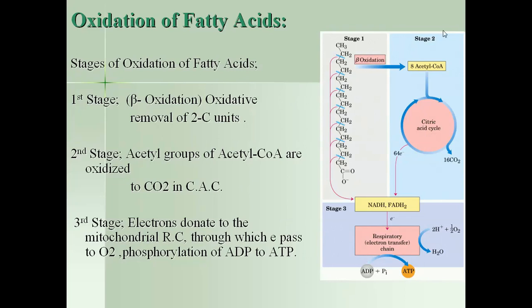In the second stage, the acetyl group of acetyl-CoA is oxidized to carbon dioxide and water in the acetic acid (TCA) cycle, which also takes place in the mitochondrial matrix. The first two stages of fatty acid oxidation produce reducing equivalents in the form of NADH and FADH2. In the third stage, electrons from NADH and FADH2 are donated to the mitochondrial respiratory chain, where they pass to molecular oxygen with the help of hydride ions. Therefore, molecular oxygen is reduced to water and energy is yielded in the form of ATP. Energy released by fatty acid oxidation is thus conserved as ATP.